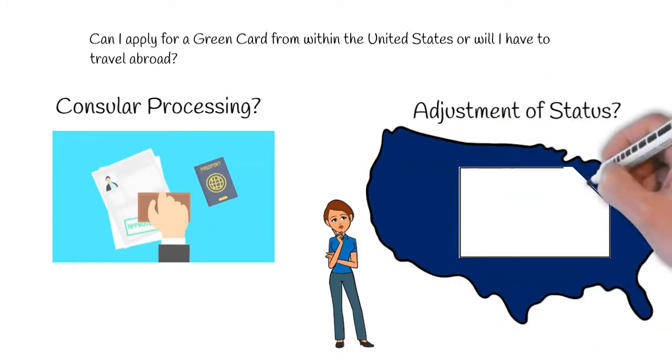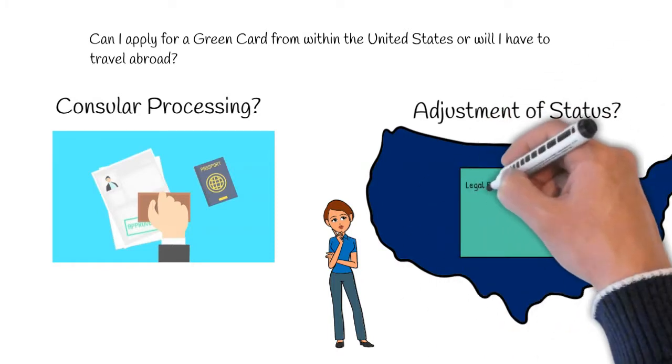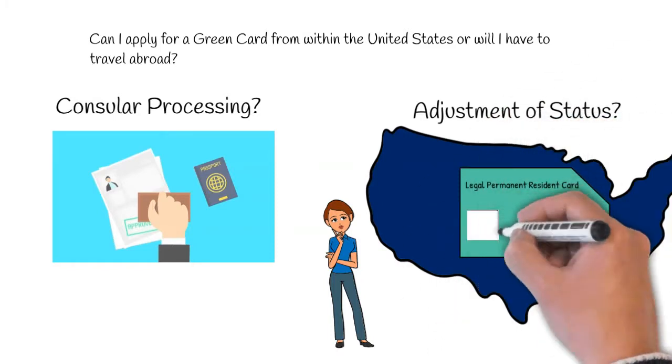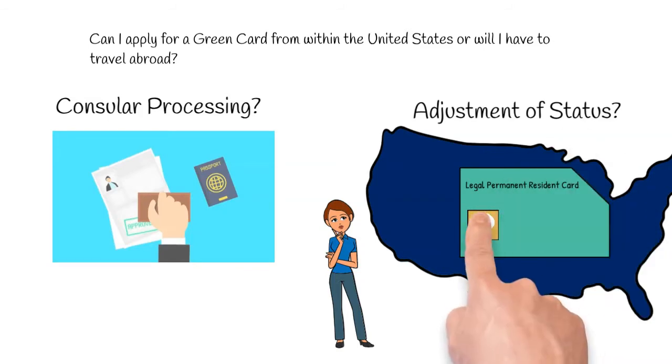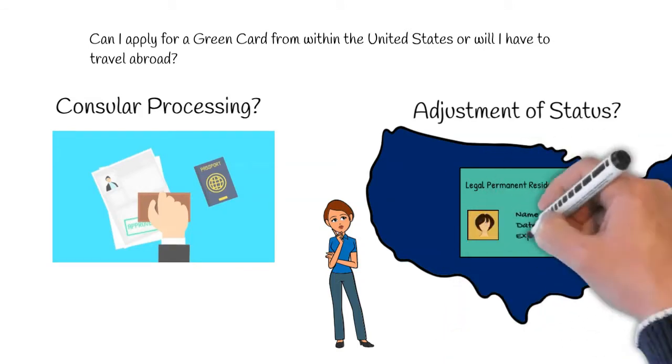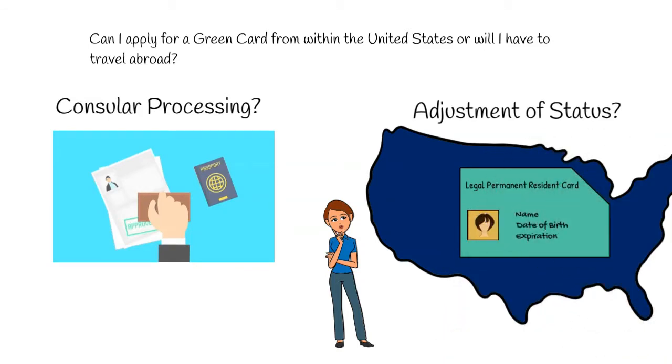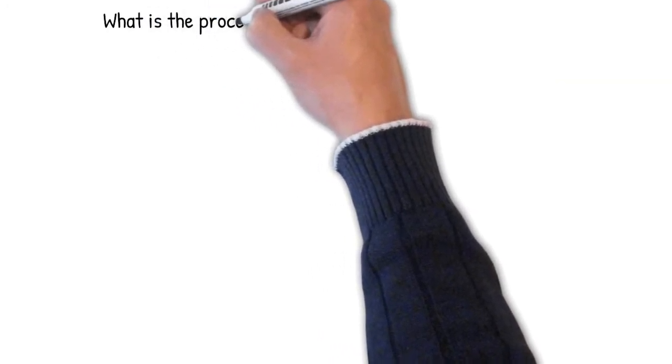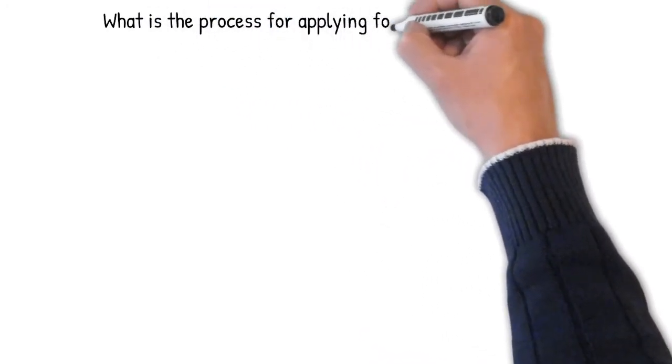Therefore, the process of applying for a green card without leaving the United States — known as the adjustment of status process — is typically considered an exception to the rule. What is the process like for a beneficiary who is present in the United States?